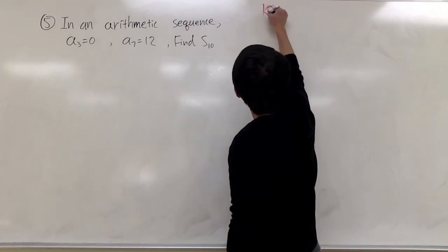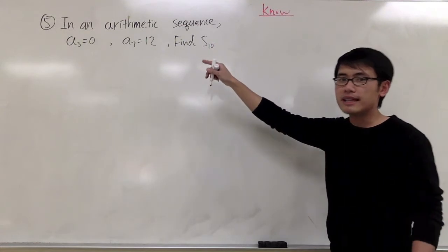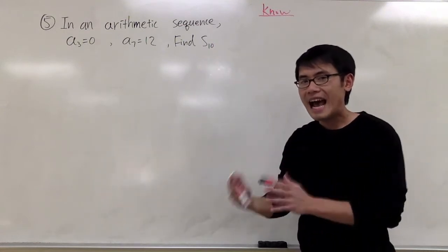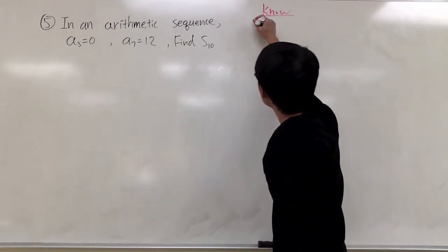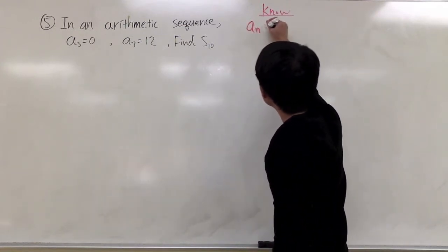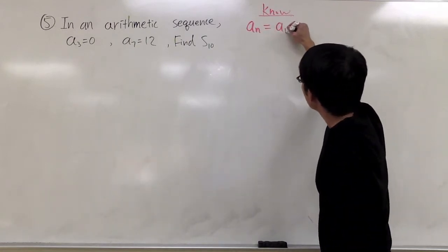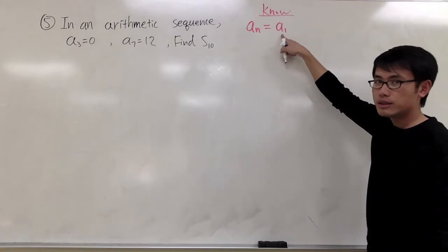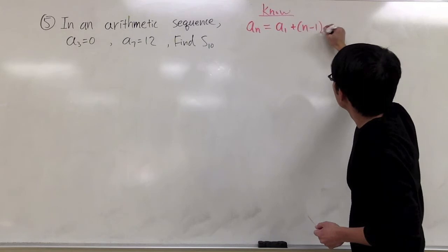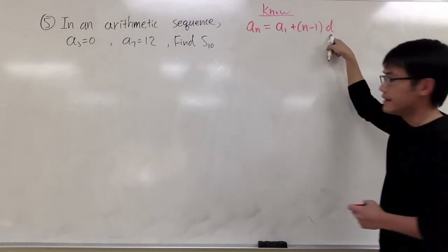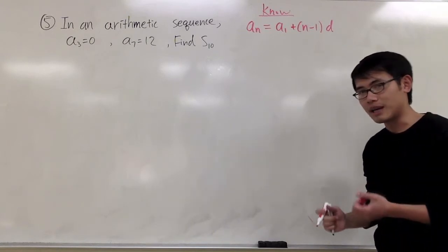Let me write down what formulas we need to know. Keep in mind, an arithmetic sequence means that it's a sequence that just keeps adding or subtracting the same number over and over. The first formula that we need is the nth term formula: an is equal to a1, the first term in the sequence, plus (n-1) times d, where d is the common difference — the number that you keep adding or subtracting.